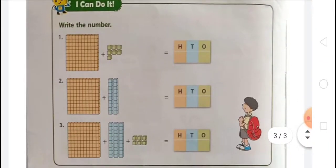I can do it! Question 1: there is 1 block of 100 blocks, so that is 100, plus 7 single blocks, and there is nothing on the tens place. So that is 107. On the ones place there is 7, on the tens place there is 0, and on the hundreds place there is 1. So the number is 107.